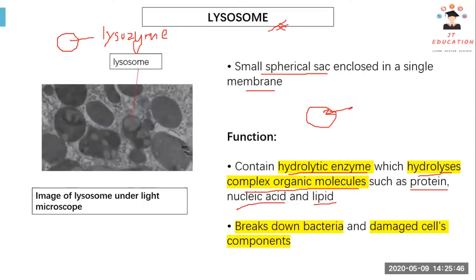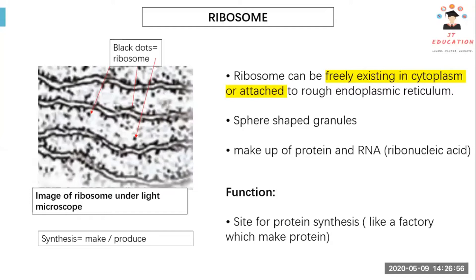Under a light microscope, ribosomes appear as black dots. Free ribosomes exist freely in the cytoplasm, not attached to anything. Attached ribosomes are bound to the rough endoplasmic reticulum. We have free ribosomes and attached ribosomes, though we generally just call them ribosomes.